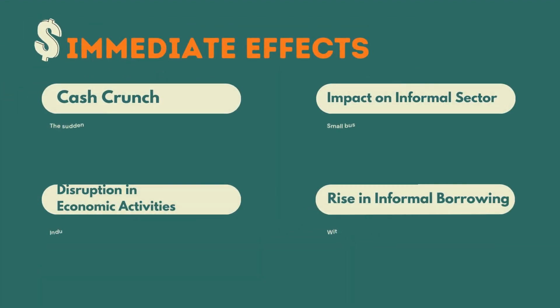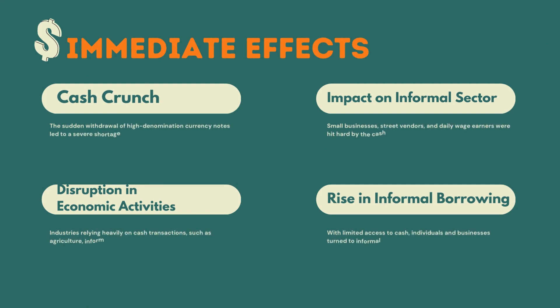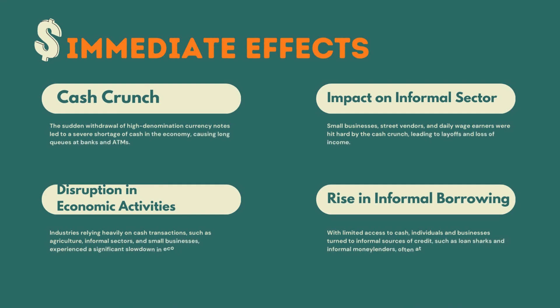The immediate effects of demonetization included a cash crunch — the sudden withdrawal of high denomination currency notes, leading to a severe shortage of cash in the economy and causing long queues at banks and ATMs. There was also disruption in economic activities, where industries relying heavily on cash transactions, such as agriculture, informal sectors, and small businesses, experienced a significant slowdown. Small businesses, street vendors, and daily wage earners were hit hard by the cash crunch, leading to layoffs and loss of income.